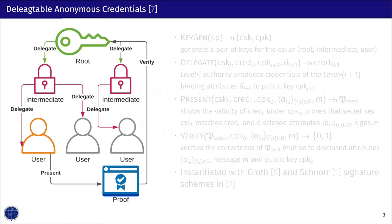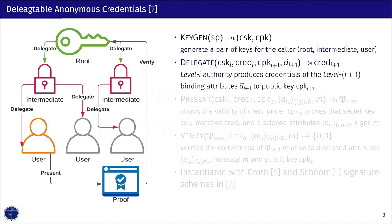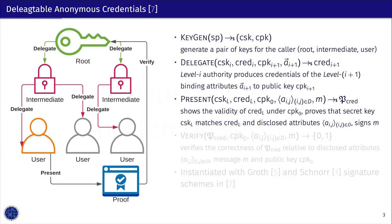This is a simplified depiction of a delegatable anonymous credential scheme we base our work on. Such a scheme has a key generation component which generates a pair of public and secret keys for each participant. The delegation routine produces the next-level credential embedding the attributes on that level and the public key of the requester. This credential can be checked for validity at any level with respect to the root authority. The presentation routine generates a non-interactive zero-knowledge proof of the credential with all its components on all levels, and verifies that the credential is valid and belongs to the presenter.